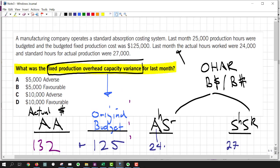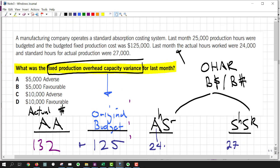Can we do that? Sure we can. Overhead absorption rate. The overhead absorption rate will be $125,000. That's the budgeted cost over the budgeted hours. So 125 over 25 equals $5 per hour. So that's the missing variable.